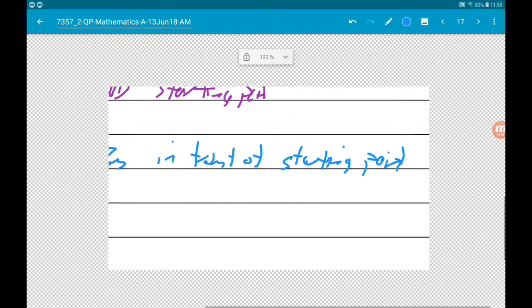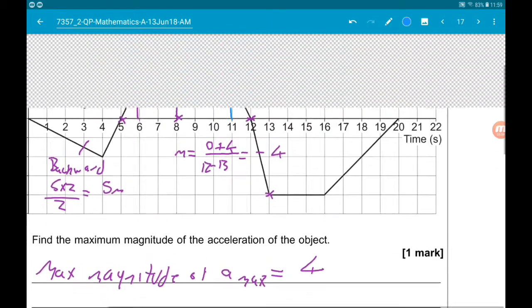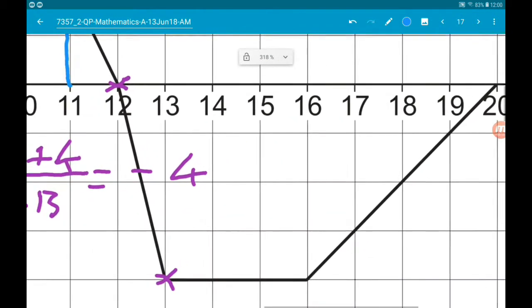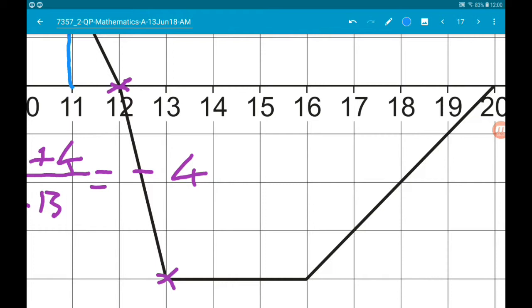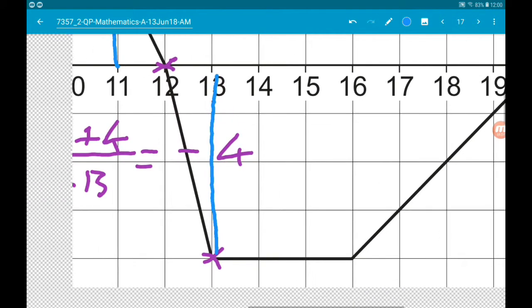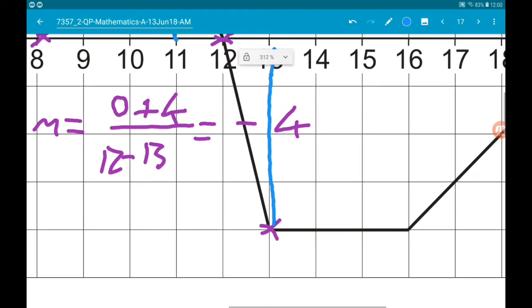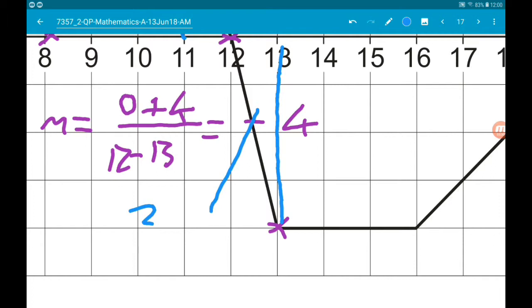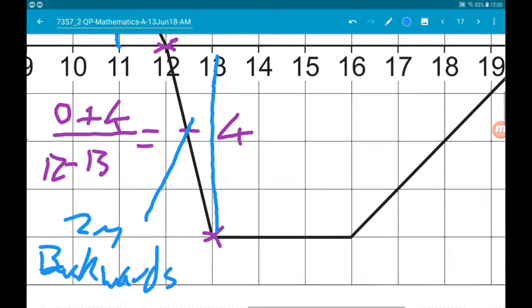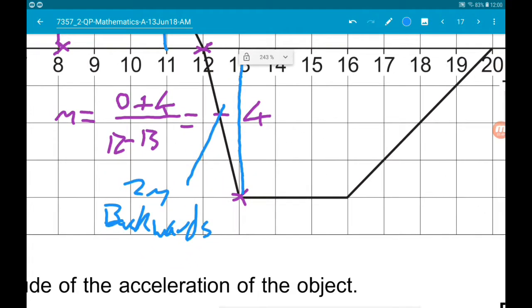So now we need to work out how long it's going to take us to go 7 meters backwards. So if we split this kind of triangle, the area of that triangle is 1 times 4 over 2, so this triangle is 2 meters backwards. So now we need to go another 5 meters backwards. Now the height of this rectangle is 4.